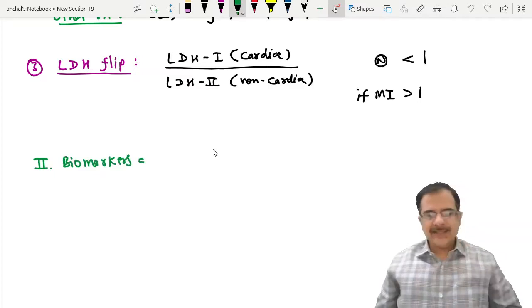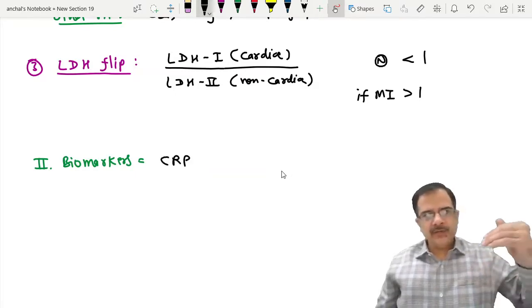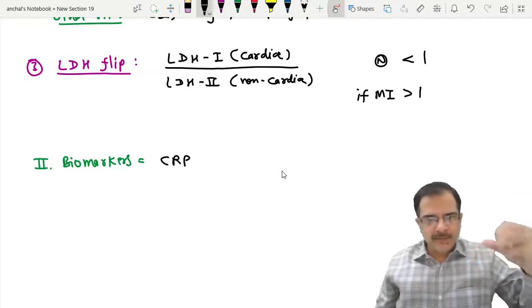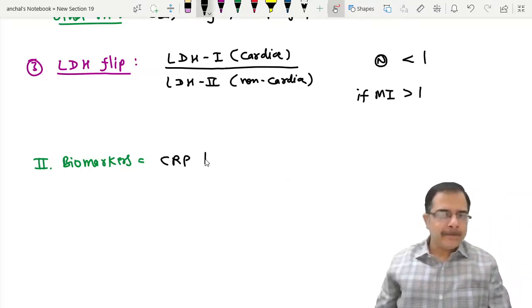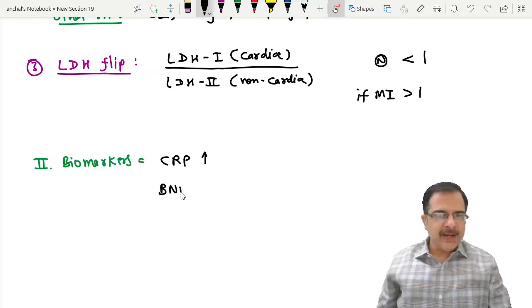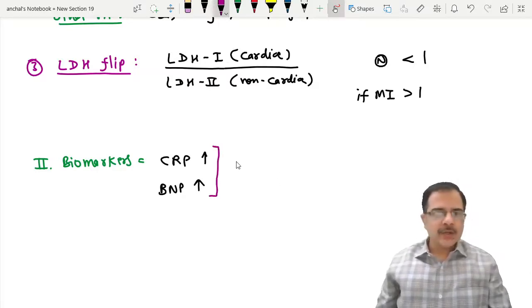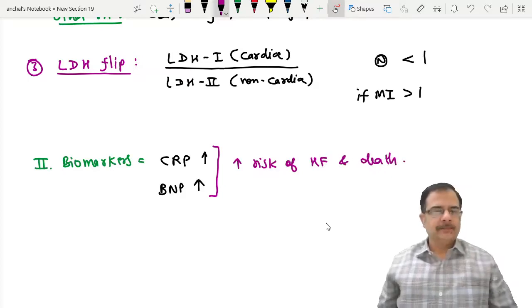Other biomarkers in MI include CRP, C-reactive protein, which is increased whenever there is inflammation. MI is a type of inflammation, so CRP will be elevated. From the ventricle stretching, BNP will be increased. If CRP is high and BNP is high, they are associated with increased risk of heart failure and mortality.